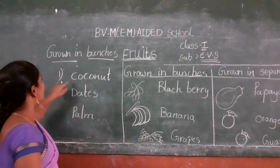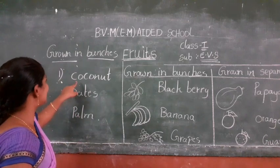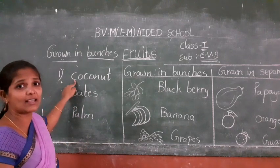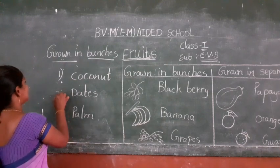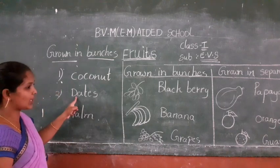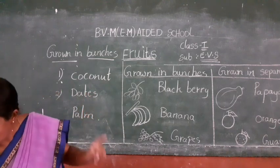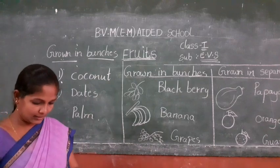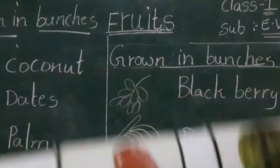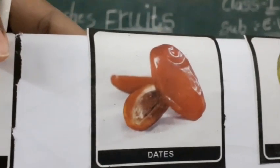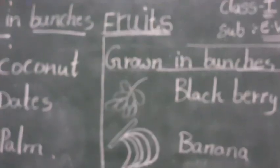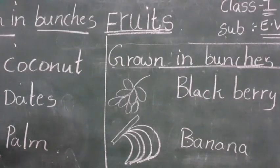Coconut is also a fruit. It's a good drink - coconut water is very good for health. Next, this fruit also grows in clusters. See here - it is a date fruit. Okay children, did you find it? It's a date fruit. Date fruit grows in clusters. It's a very sweet fruit.